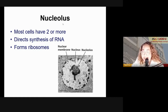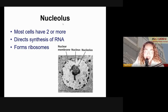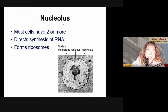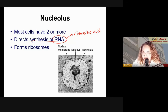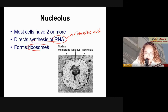Inside the nucleus is another region called the nucleolus, which is where ribosomes are made. The nucleolus also directs the synthesis of RNA — Ribonucleic Acid — which is a component related to DNA. So the nucleolus is the site of ribosome production, and ribosomes are responsible for protein synthesis.